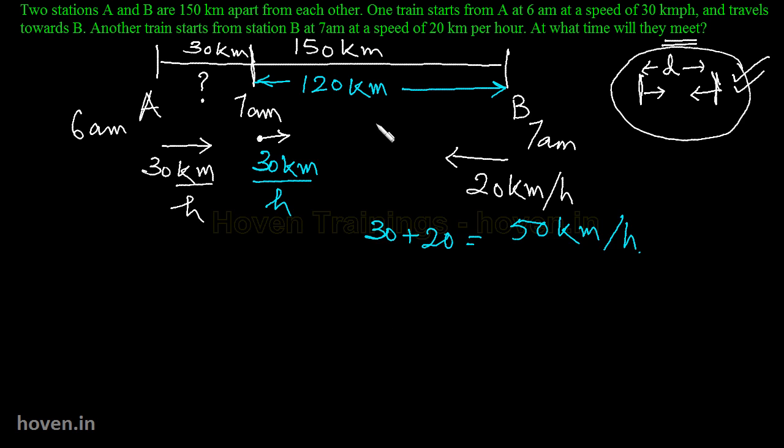Yeh is rate peh yeh wala distance reduce hoot hai. Toh basically 120 km kitni dihr mein reduce hooga. Iska set up kar saktay hai 50 km meh. 50 km ko voh 1 hour mein reduce keretai. 1 ko karrega 1 by 50. Or 120 ko woh karrega. Isi ko 120 se multiply karrega. Jeh 0 cut jayega. Toh yeh aajata hai 12 by 5. Yeh mehre paas hai hours mein.